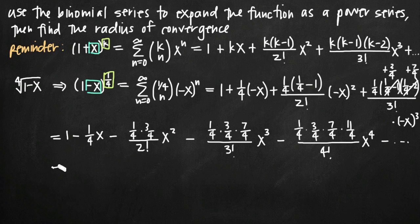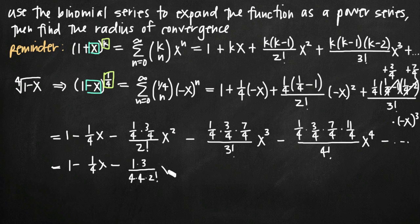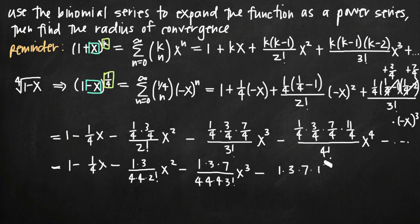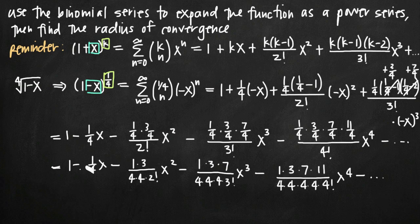Before we write our power series representation, we can simplify one more thing. We can bring all of the 4s in the denominators of those fractions down into the overall denominator. So we'll end up with 1 minus 1/4 x, then minus (1 times 3) divided by (4 times 4 times 2 factorial) times x squared, then minus (1 times 3 times 7) divided by (4 times 4 times 4 times 3 factorial) times x cubed, and then minus (1 times 3 times 7 times 11) divided by (4 times 4 times 4 times 4 times 4 factorial) times x to the 4th.